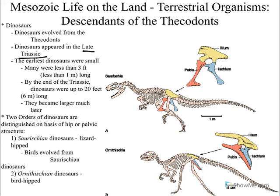We can break our dinosaurs down into two groups: we have the Saurischians and the Ornithischians. The way we break them down is by looking at the hip structure. All hips have three bones on each side — yours does too. The top bone is called the Ilium; this is the part you can feel if you feel your hip bone, you're feeling your Ilium. Then you have the Ischium and the Pubis.